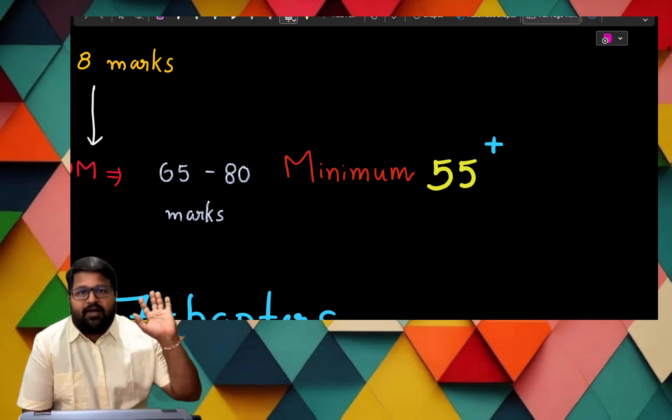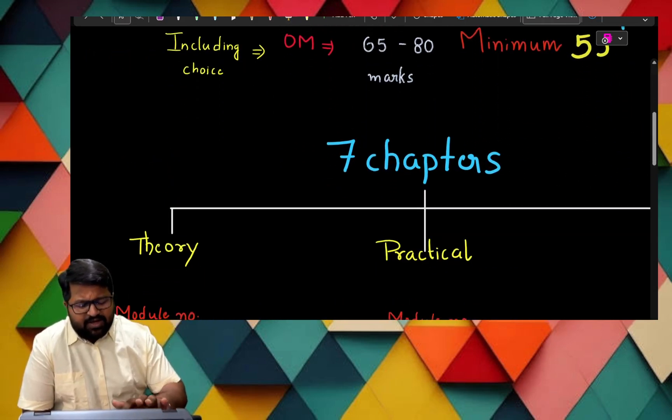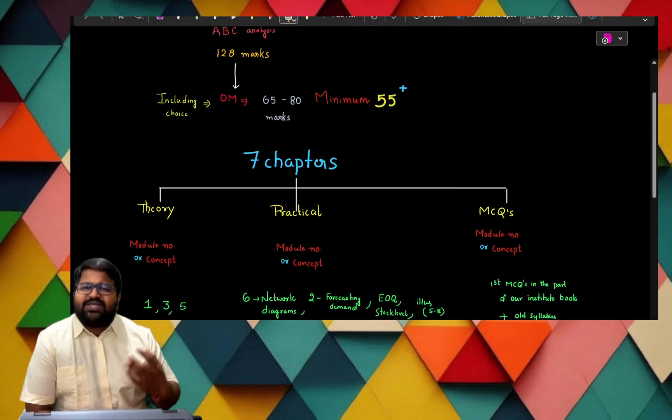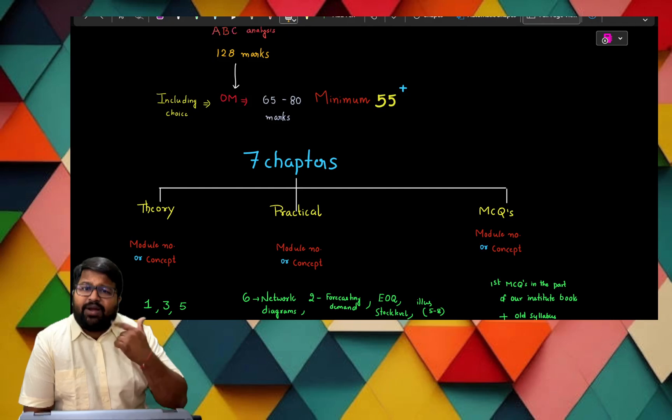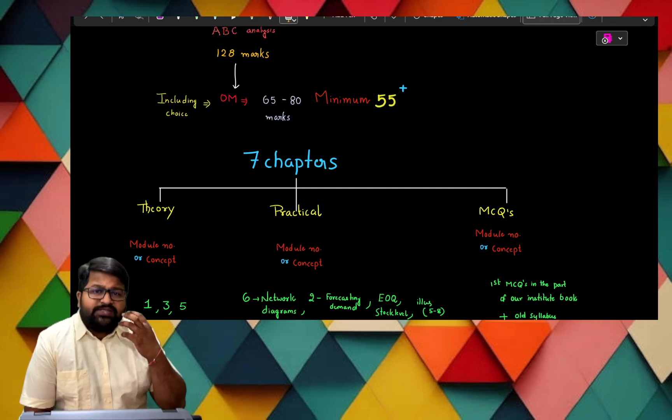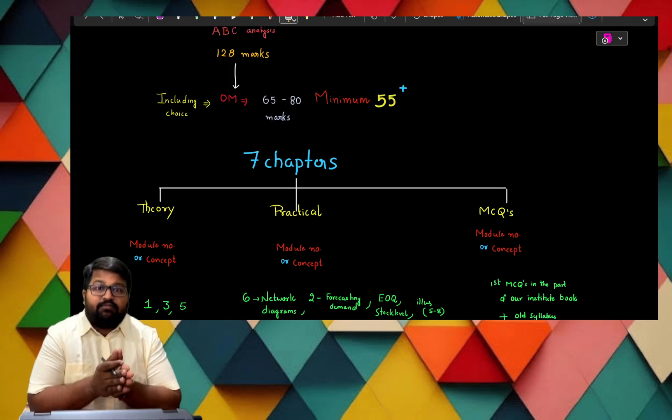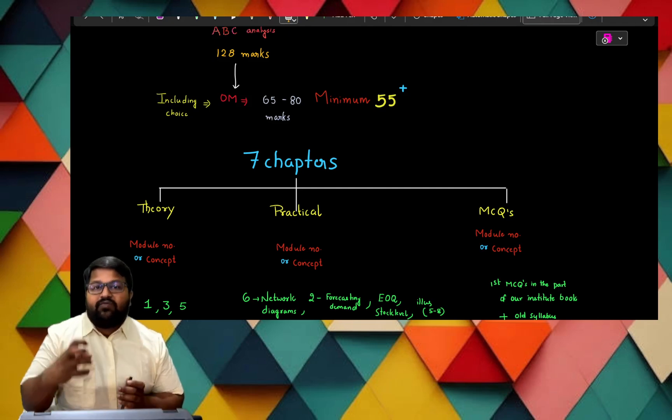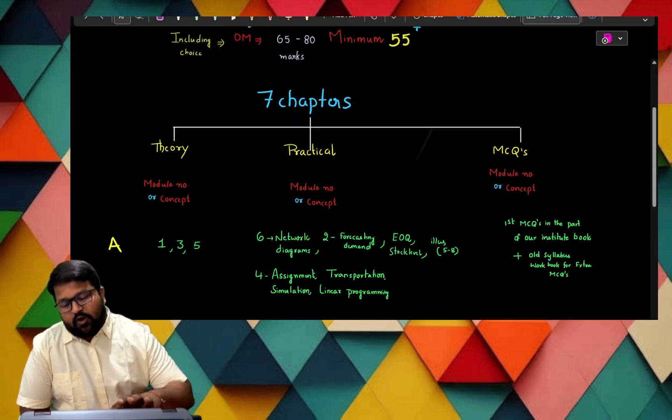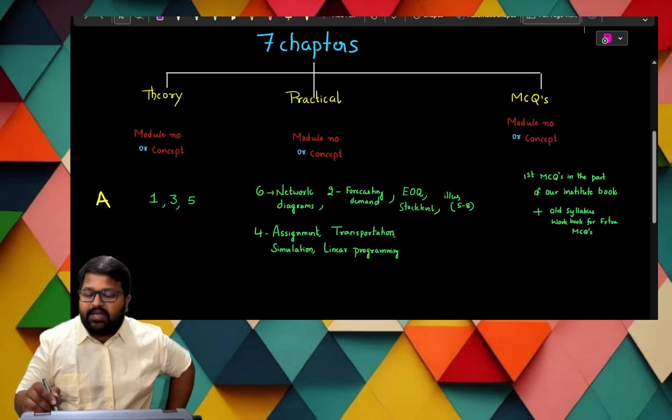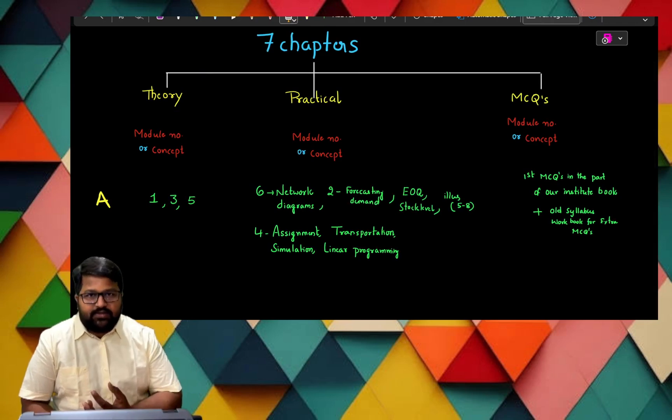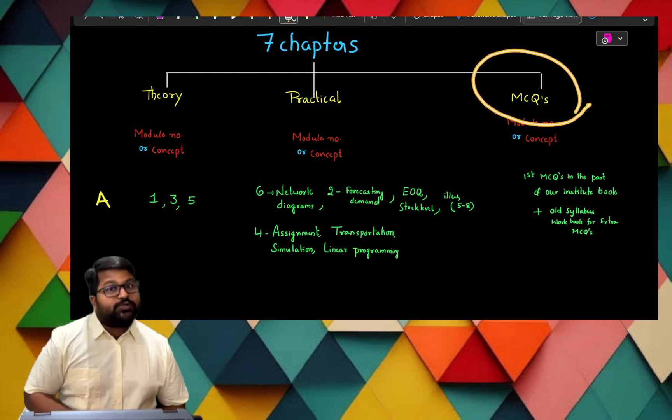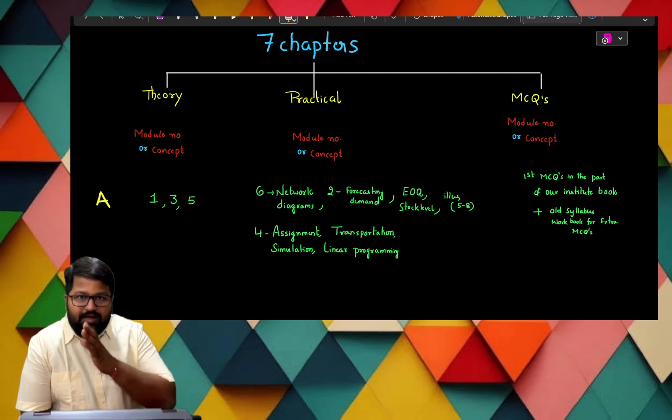I have made a strategy. Totally we are having how many topics? In our OM there are seven topics. The seven topics are bifurcated into three parts: Theory, Practical part, and MCQs. The main motive of ABC analysis is to drive you in a perfect way, perfect path. Not like that I will start with the first chapter, first module, then second module in that order. If you go in that order, you are really doing a crime. First, for theory I made ABC analysis, for practical portion I made ABC analysis, and for MCQs also I made ABC analysis.